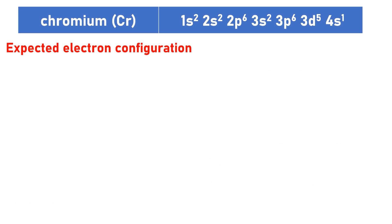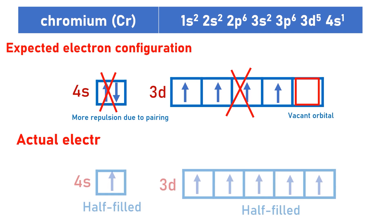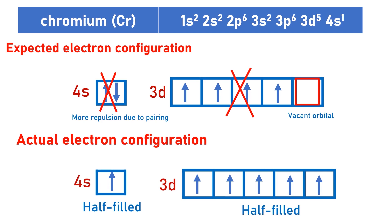Applying that to chromium, for a more stable electron configuration and to minimize the repulsion between the electrons in the 4S, one electron from the 4S moves to the 3D so that both the 4S and 3D become half-filled.